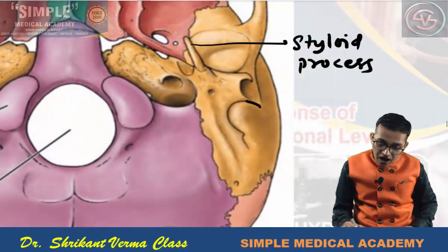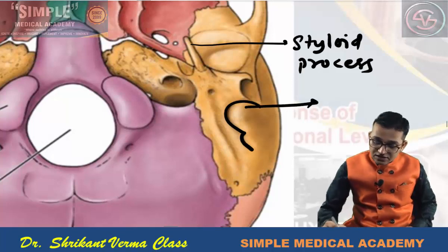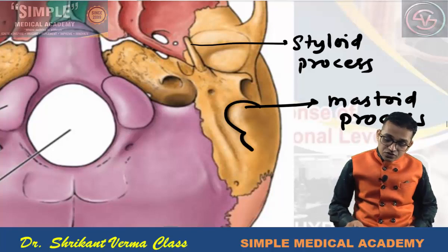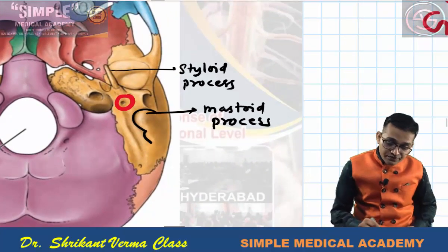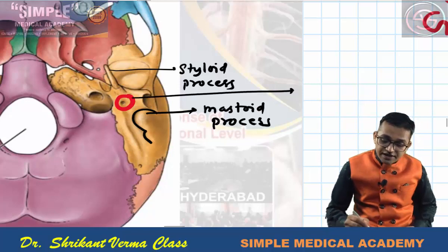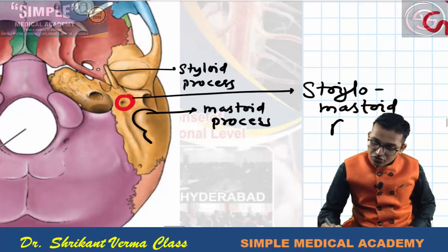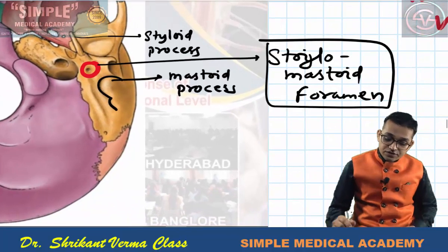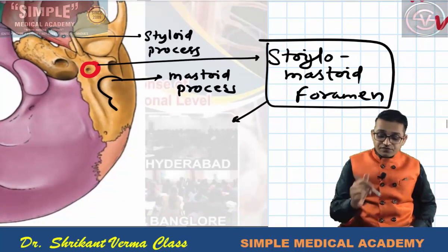There is one large bony projection at the inferior side of the skull, known as the mastoid process. There is one opening located between the styloid process and the mastoid process. The name of this opening is the stylomastoid foramen, and it is very important because this stylomastoid foramen gives an exit pathway to the facial nerve.